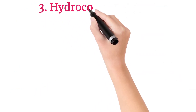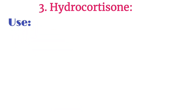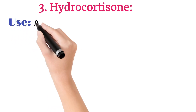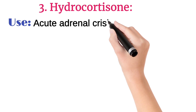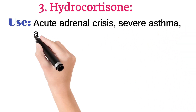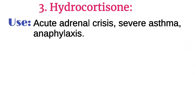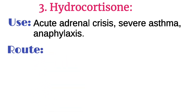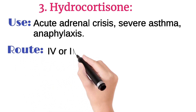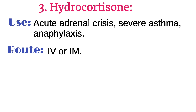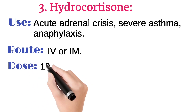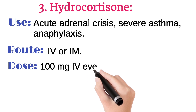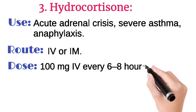The third one is hydrocortisone. It is used in acute adrenal crisis, severe asthma, and anaphylaxis. It is injected intravenously or intramuscularly. Its usual dose for adults is 100 mg intravenously every 6 to 8 hours.